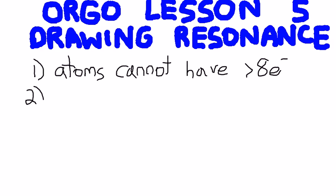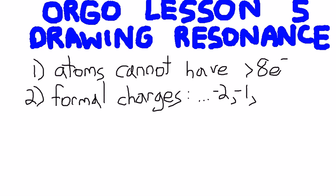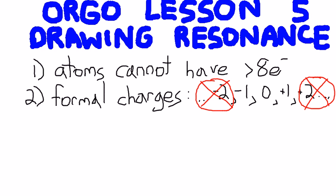Our second rule is we have to avoid formal charges with a magnitude greater than 1, which means that we can't have anything minus 2 or lower, and we can't have anything plus 2 or higher. However, negative 1, 0, and plus 1 are valid for a resonance structure, they're allowed.